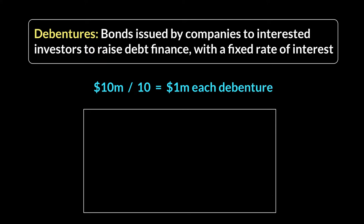That's how the basic structuring of a debenture works — determining what is the worth of each piece of debenture. In this example, we divided the $10 million into 10 debentures of $1 million each. Now, what does a debenture look like? A debenture will have four pieces of information on it. It's like a piece of paper that you get in return for the money.